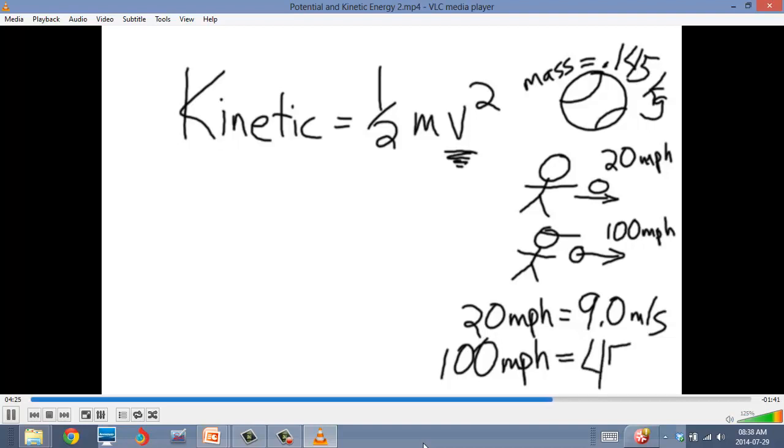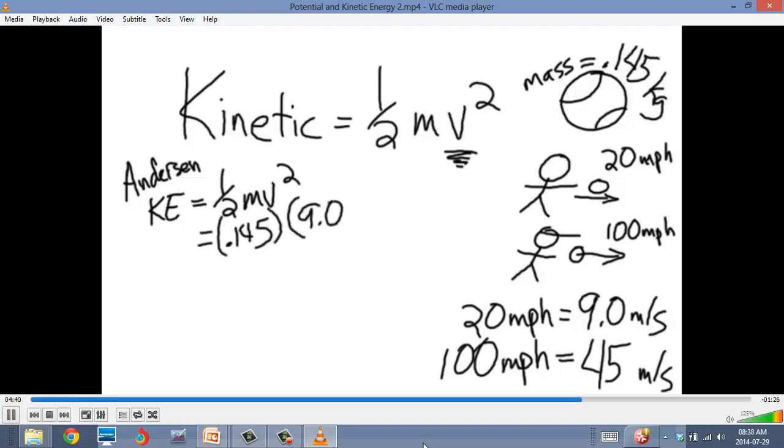A 100 mile an hour pitch, then, is roughly 45 meters per second. And so first of all, let's figure out how much kinetic energy my pitch would have, a 20 mile an hour pitch. We use the equation 1 half mv squared, where m is 0.145 kilograms, and v is 9.0 meters per second. We then take that times a half and square the velocity, and I get, using significant digits, 5.9 joules of energy.